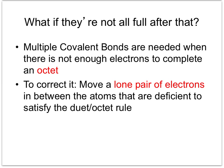So what happens if you follow those three rules, put in the correct number of electrons, but still have atoms that have not completed their octet? That signals that a multiple covalent bond will need to be present, meaning either a double or a triple bond will be placed into the picture. To figure out which one, you will move a lone pair of electrons in between the atoms that are deficient to satisfy the duet or octet rule.